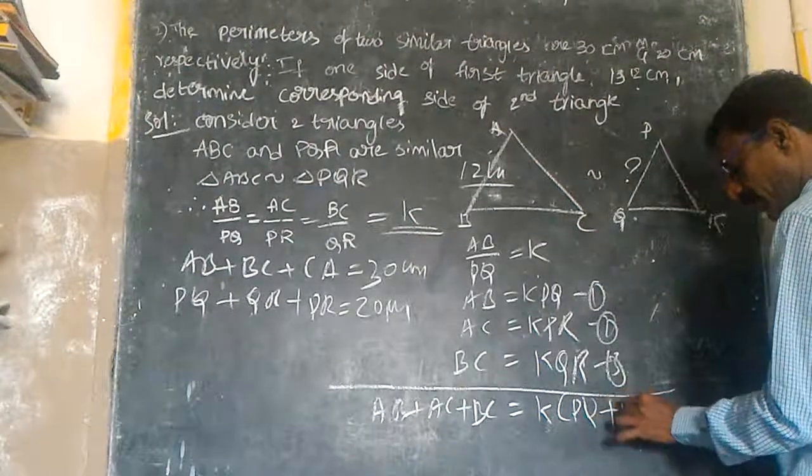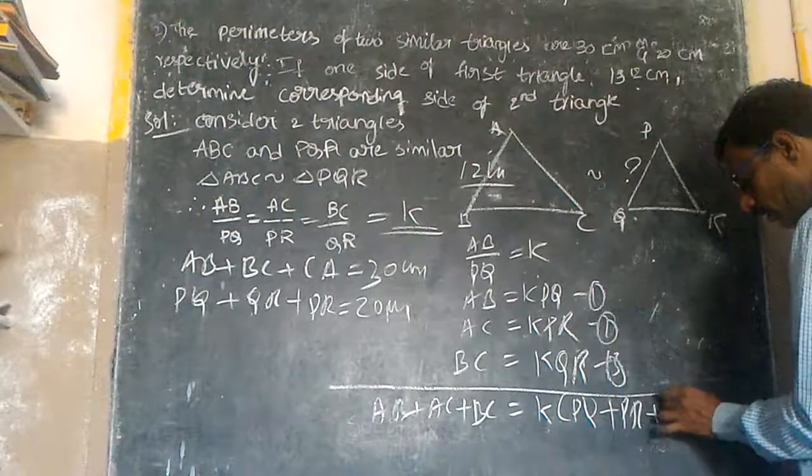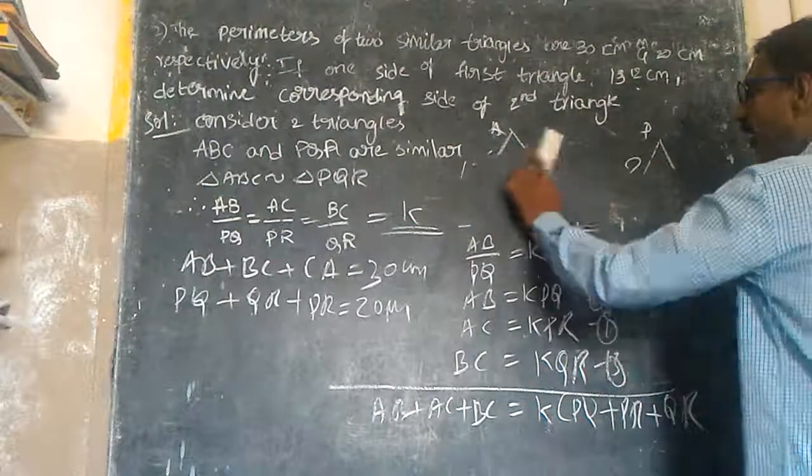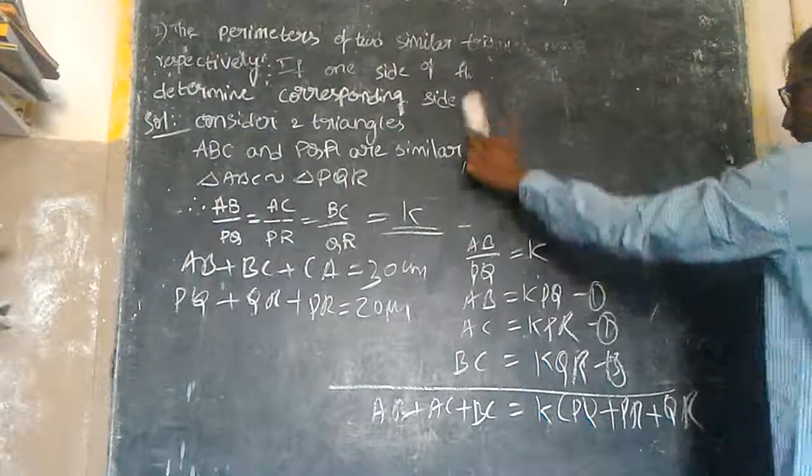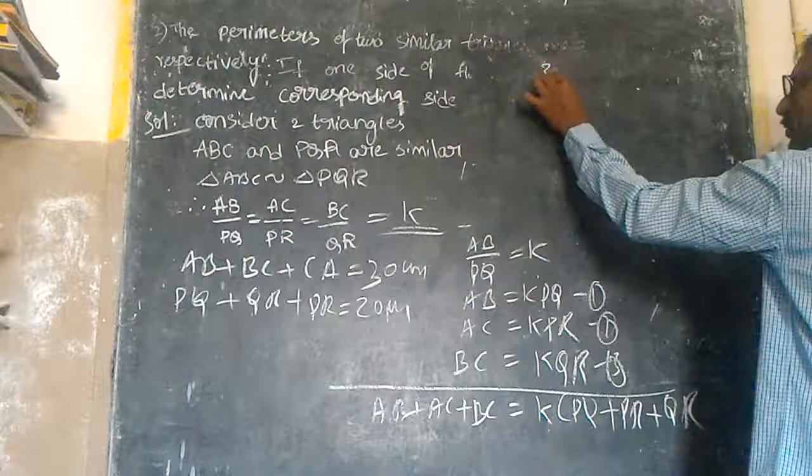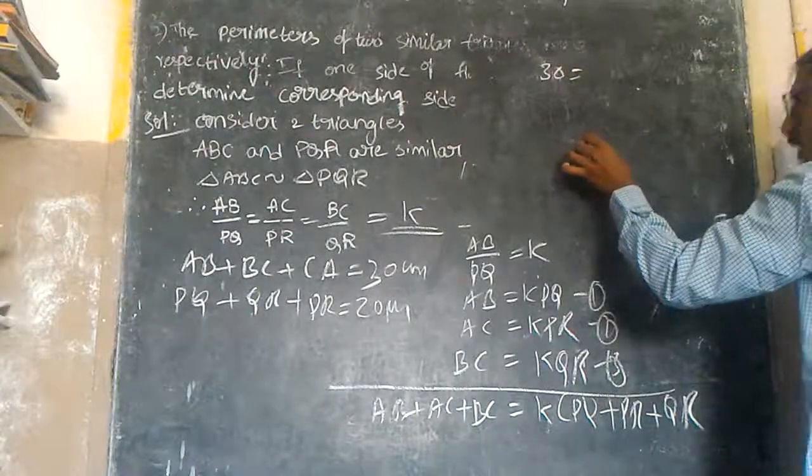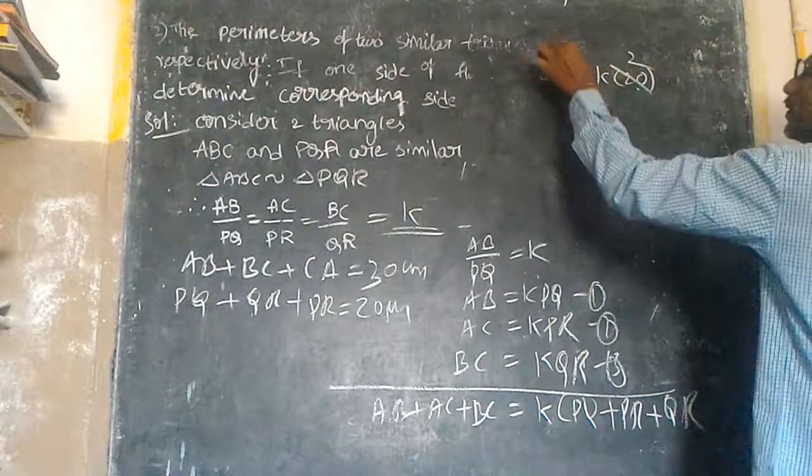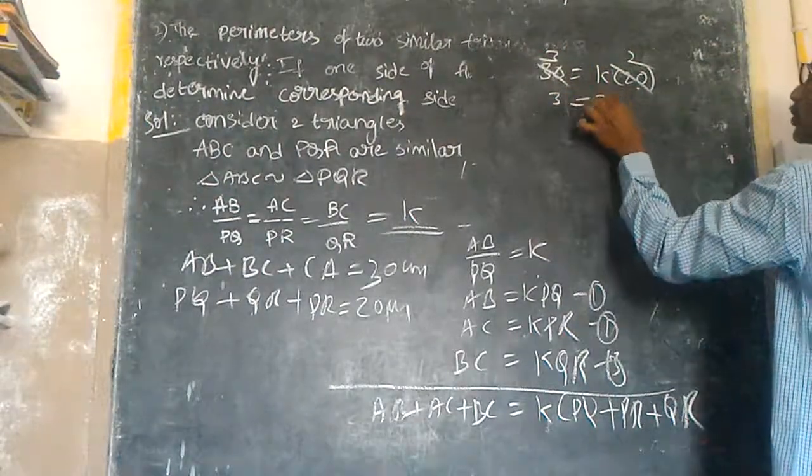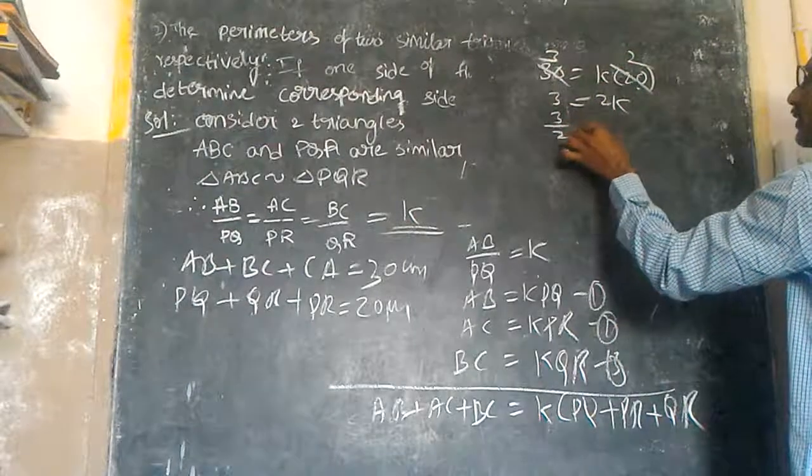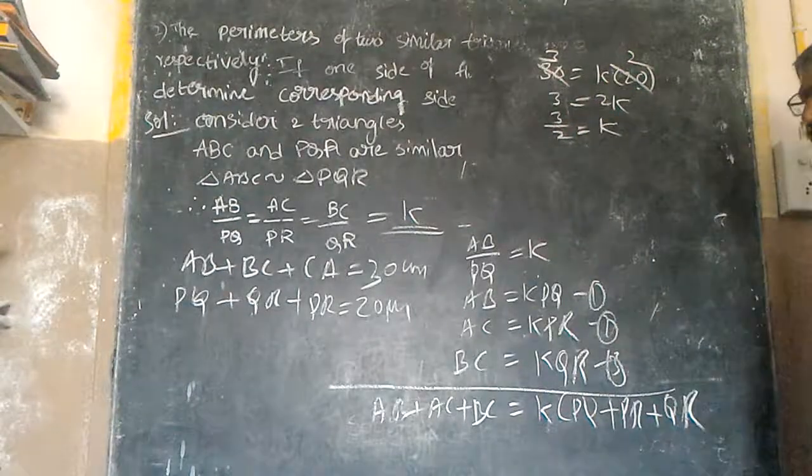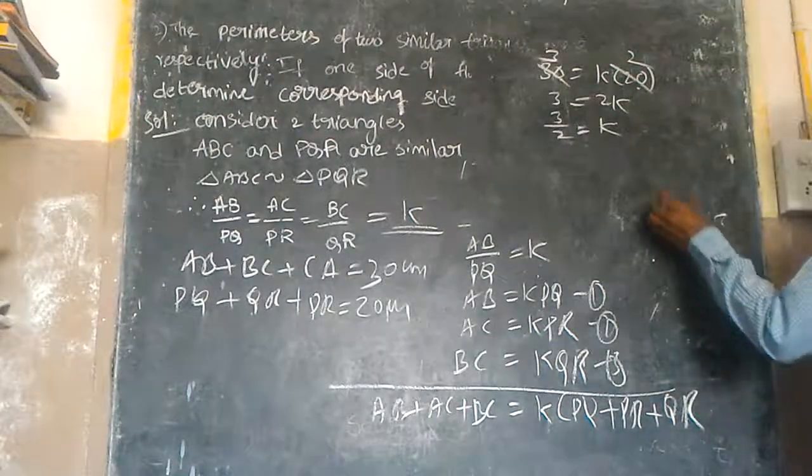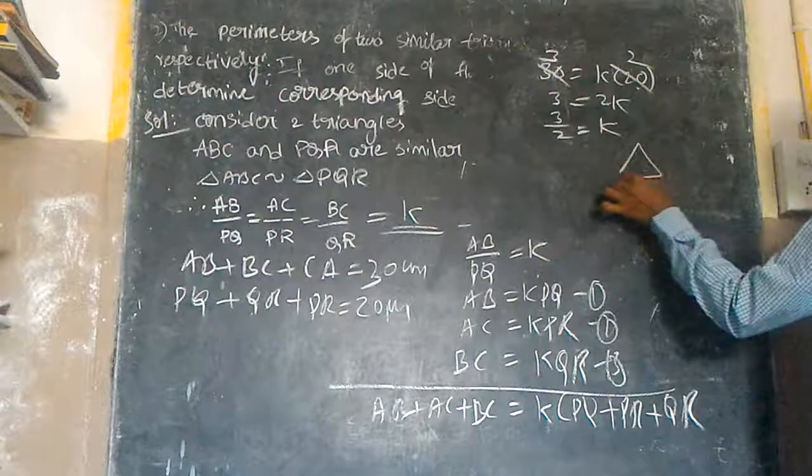PQ plus PR plus QR, which is 20 cm. So 30 is equal to K into 20. 30 is equal to 2K. K is equal to 3/2.